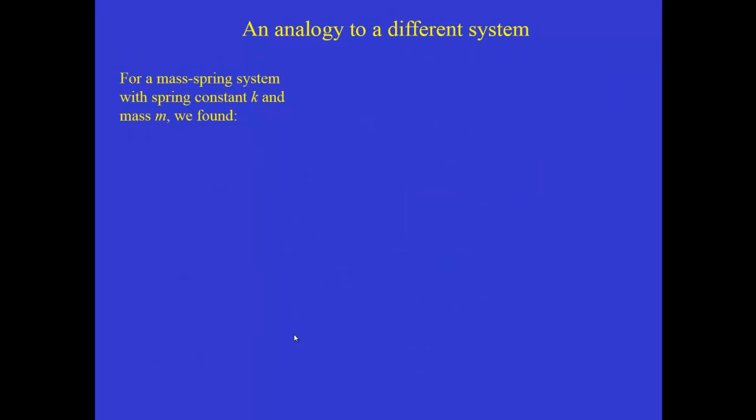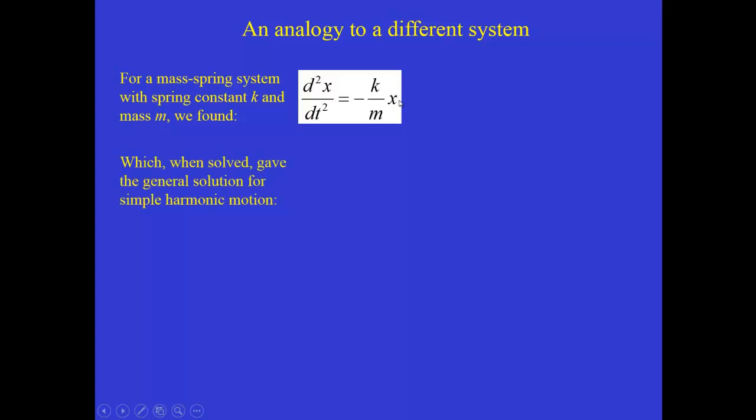For a mass-spring system, with a spring constant K and a mass M, when we applied Newton's second law and then rearranged the equation, we found that the second derivative of position, of the position of the mass-spring system with respect to time, was equal to minus the spring constant over mass times the displacement X. And this has exactly the same form as the equation that we just found for charge.